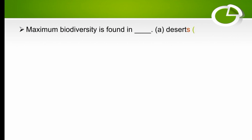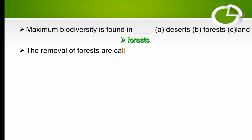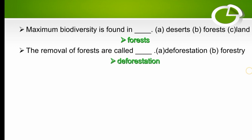Maximum biodiversity is found in forests — the right option is forests. The removal of forests is called deforestation — the right option is deforestation.